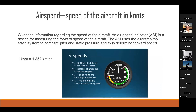Next is the airspeed indicator, which automatically tells the speed of the aircraft in knots. In the image, the white portion indicates the flaps-down stall speed, the green portion indicates the bottom of the flap stall speed, and the yellow portion indicates the cruise speed of the aircraft. One knot is equal to 1.852 kilometers per hour.